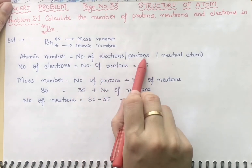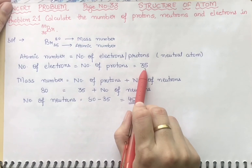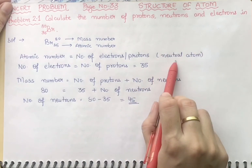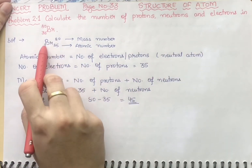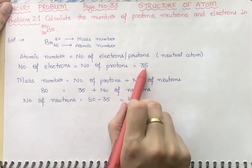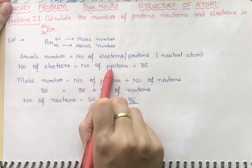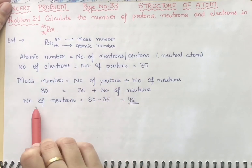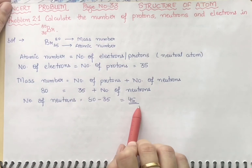So for bromine, a neutral atom: the number of electrons equals the number of protons, which is 35, and the number of neutrons equals 45.